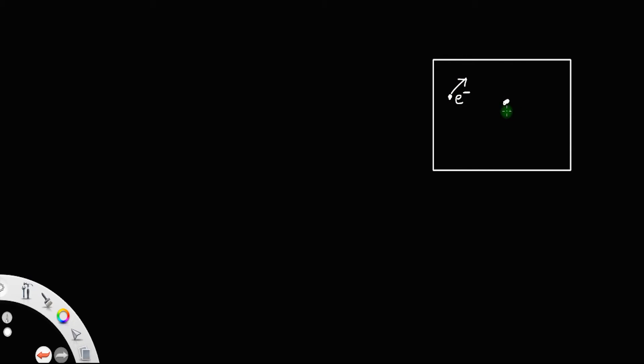Let us derive an expression for the drift velocity of an electron on application of an electric field. Suppose you have a conductor — any conductor — and before application of an electric field, the electrons move in random directions due to their thermal speeds. There is no particular direction for the motion of electrons; an electron can move in any direction.